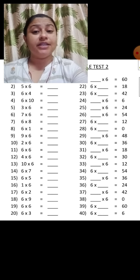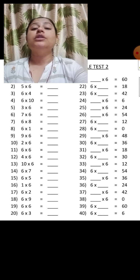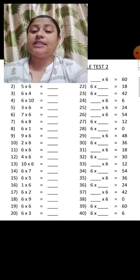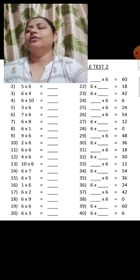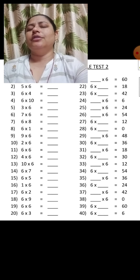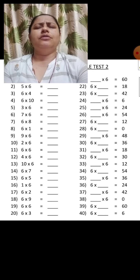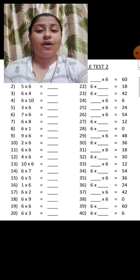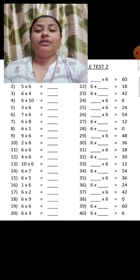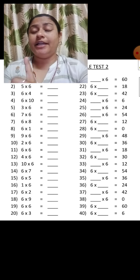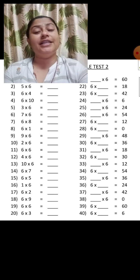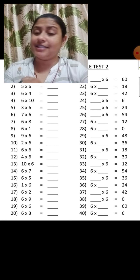6 sixes are 36, 6 sevens are 42, 6 eights are 48, 6 nines are 54, 6 tens are 60.